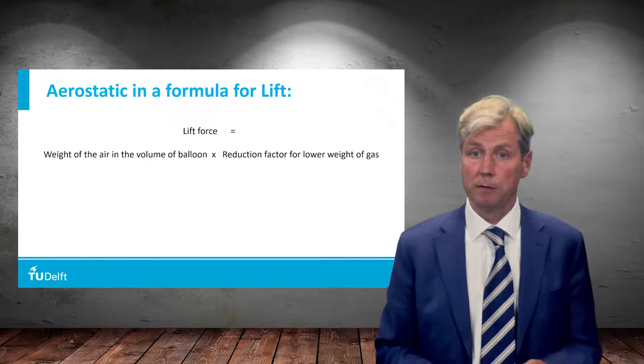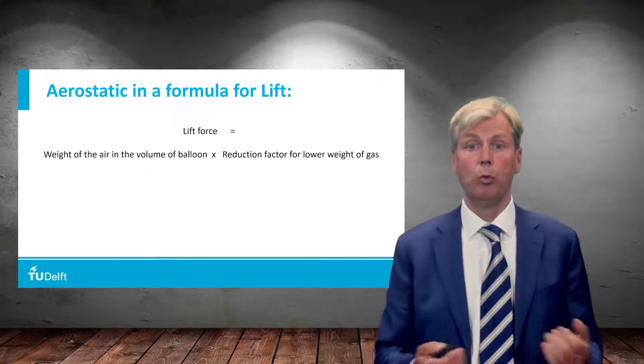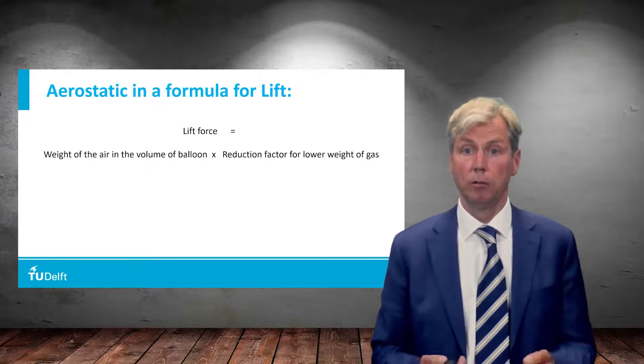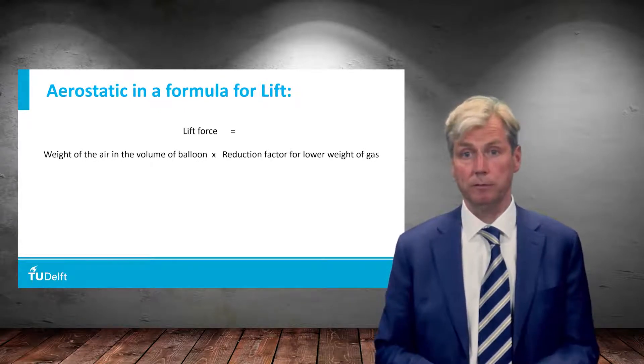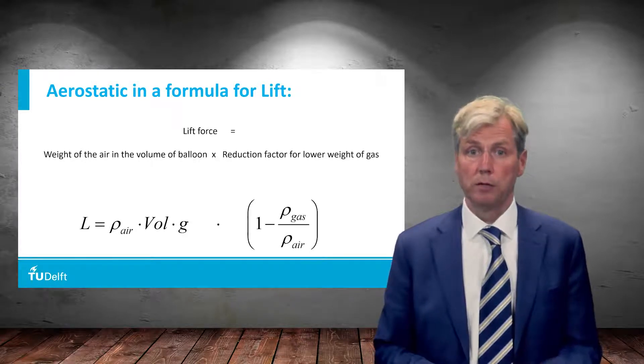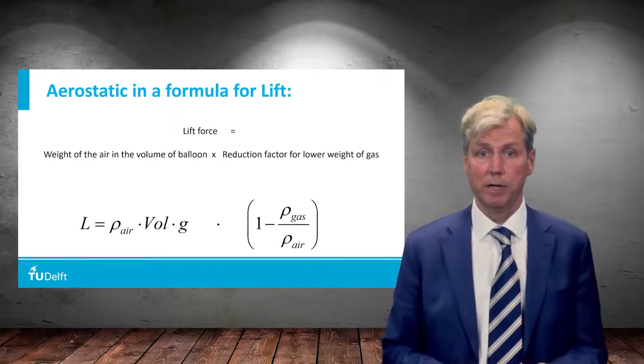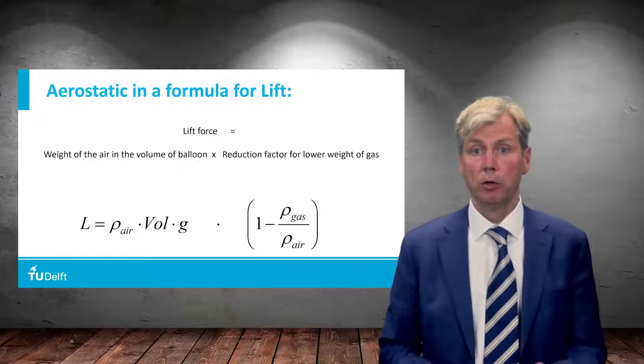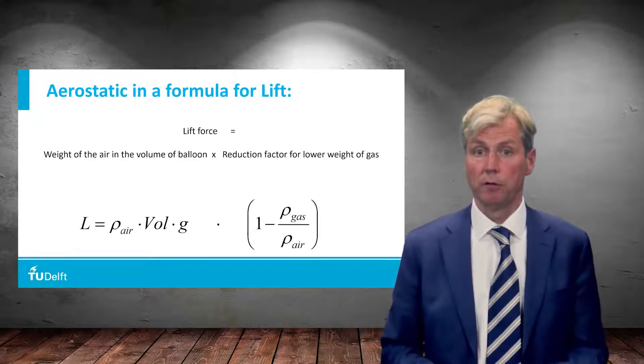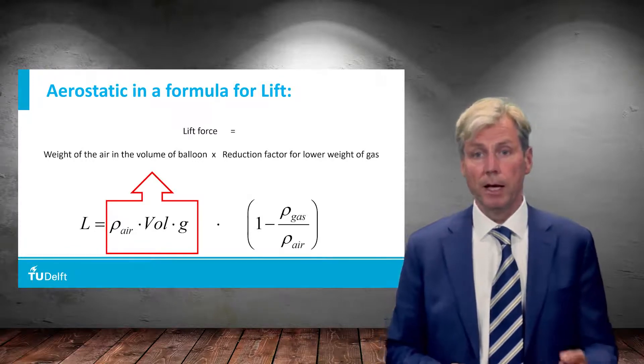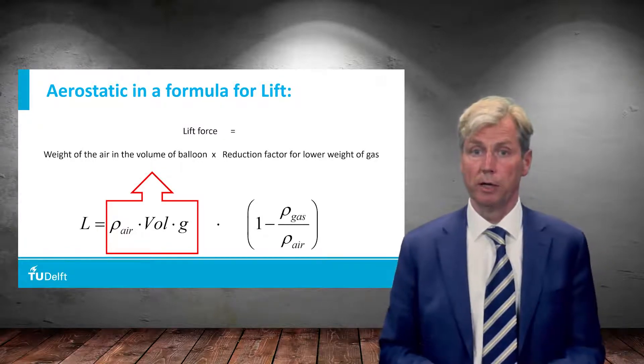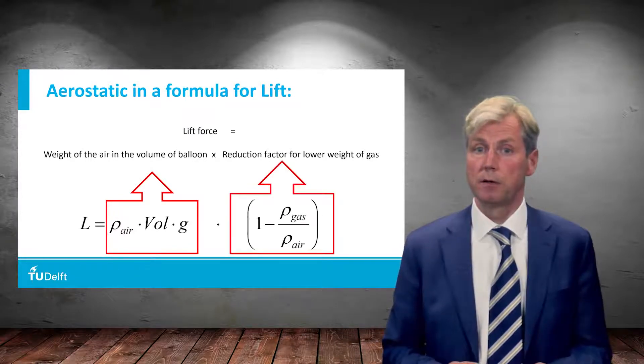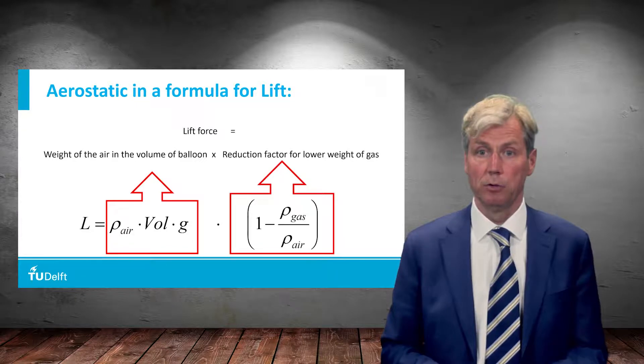In a physical formula, we would say that the lift force is equal to the weight of the air multiplied by the reduction factor because you put something lighter in it. And this would look like this. You take the specific weight, the density of the air, multiplied by the volume to get the mass of this air, multiplied by the gravity constant to get the weight of the air. And then based on the difference in density, you can calculate the reduction in weight by the gas, and therefore this is this factor. And these two are the lift formula for ballooning.